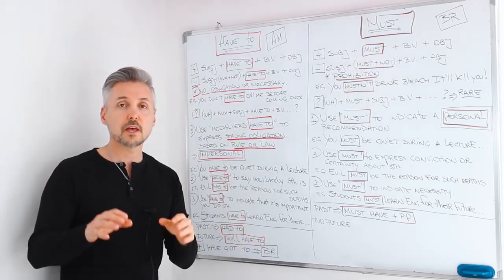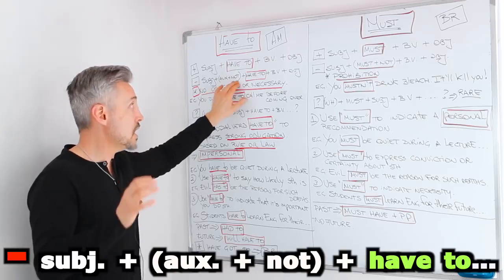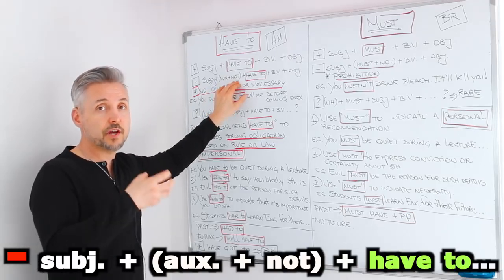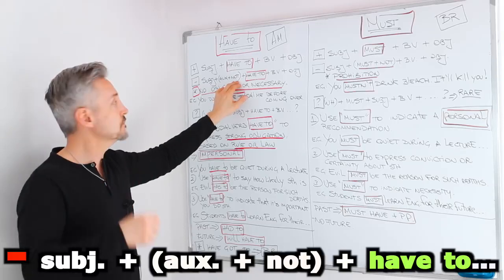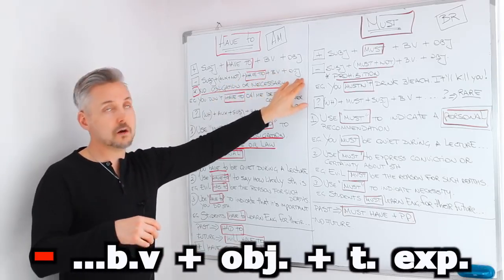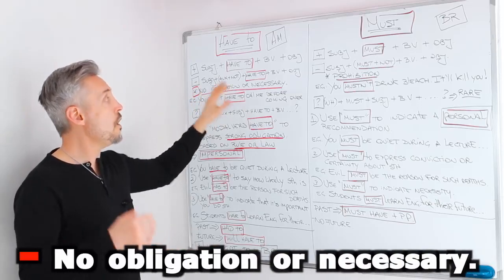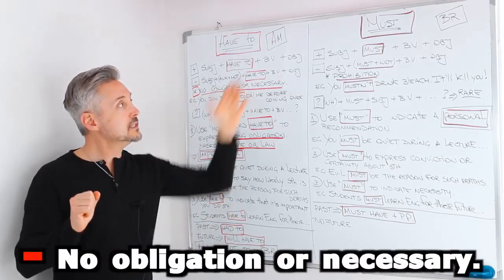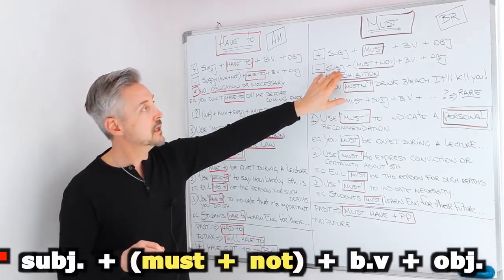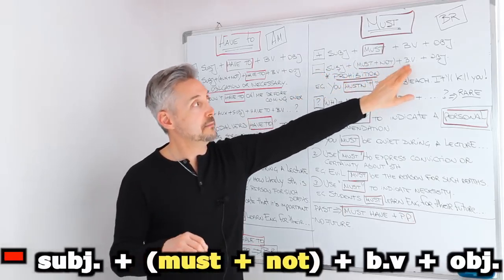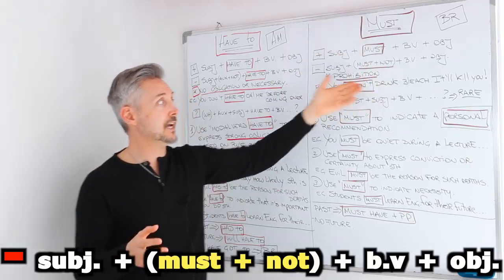When we write a negative sentence, we need: subject + auxiliary + not — the auxiliary of the tense we are using, so it could be do, does, did, or will — plus 'have to' + base of the verb + object + time expression. If we use 'have to' in a negative sentence, it means no obligation or necessity. Instead, if you use 'must not' in a negative sentence, the formula is: subject + must + not + base of the verb + object + time expression, if any.